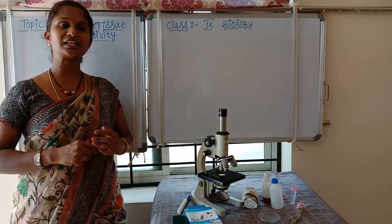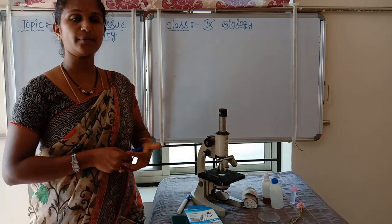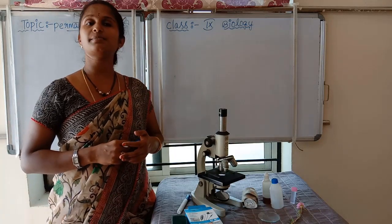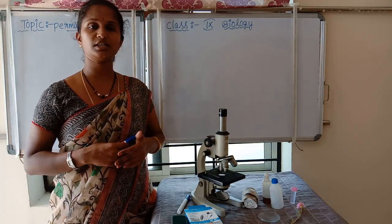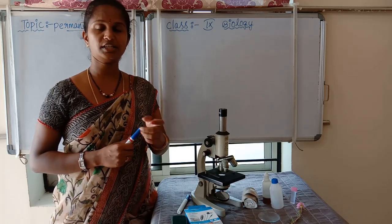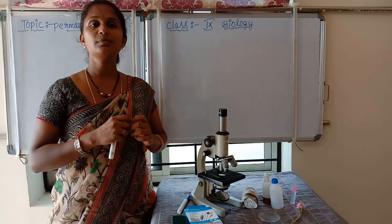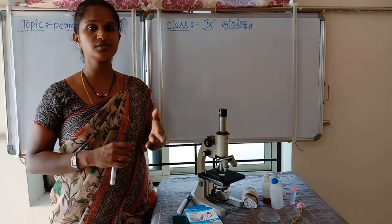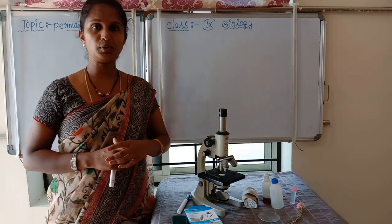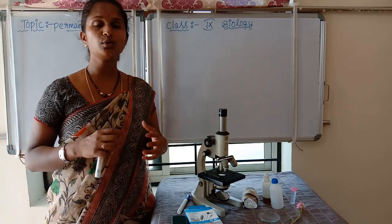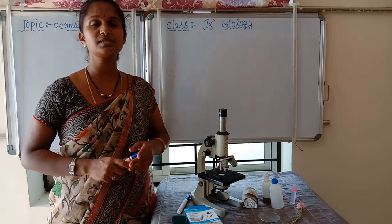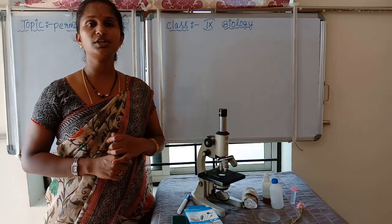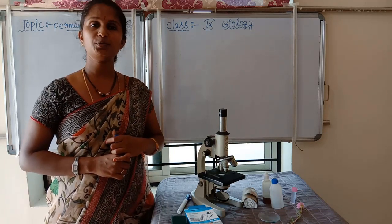Good morning students. Welcome to biology class. In the last class we already discussed about the permanent tissues and the meristematic tissues. We did one activity where we kept an onion in water. The meristematic cells in the onion increased the root length, which you observed and recorded in your observation table at home.